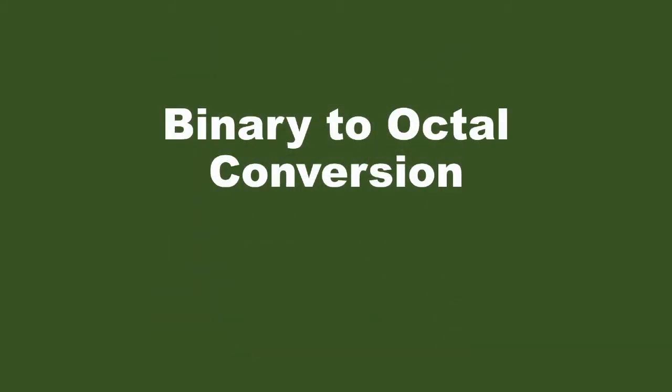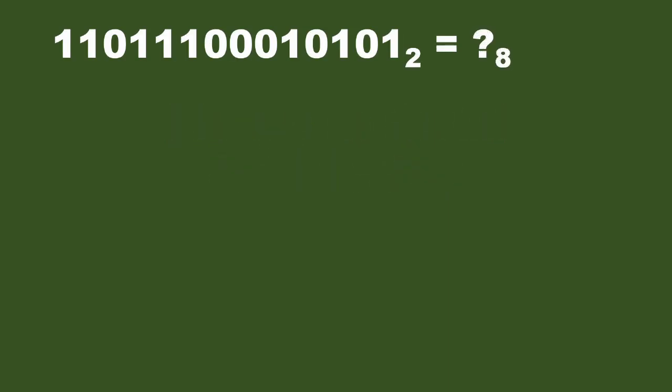How about converting from binary to octal? We learned that one octal value is represented as three binary digits. Going the other way — binary to octal — the binary digits will be grouped by three, starting from the least significant bit. For example, we have this binary value: 1 1 0 1 1 0 0 0 1 0 1 0 1 0 1. We group the digits by three starting from the rightmost bit.